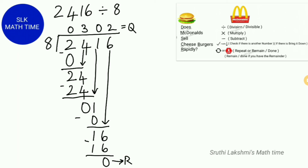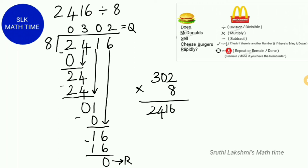To check our answer, we do quotient times divisor plus remainder. Here the quotient is 302 and the divisor is 8. So we do 302 times 8, which gives us 2416. Since our remainder is 0, we don't have to add anything — our answer is right. So 2416 divided by 8 is 302.